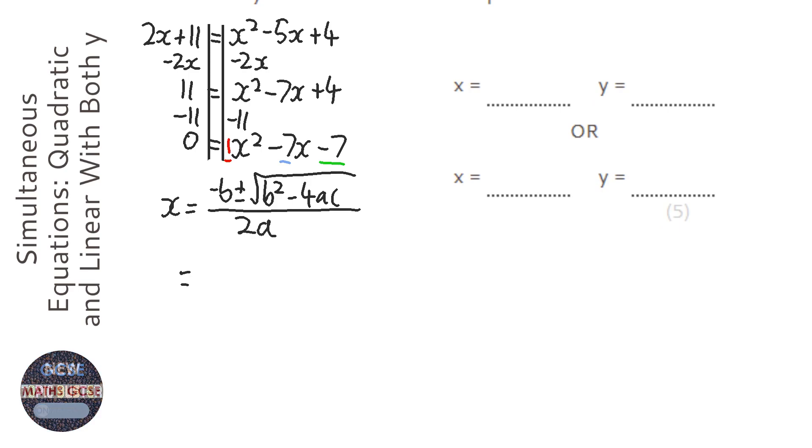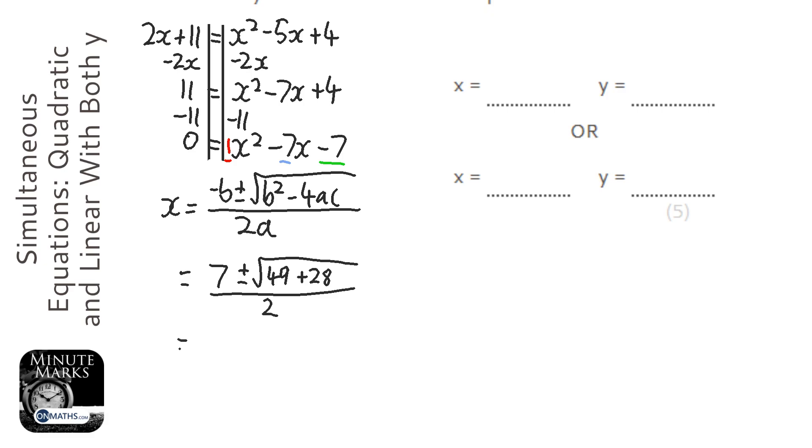So minus b is going to be just 7, plus minus b squared, which is going to be 49, minus 4 times a, which is 1 times c. So it's going to be, and you can use your calculator for this. So it's minus 4 times minus 7, which is positive 28, so it's going to be plus 28. OK, over 2. And so 49 plus 28 is going to be 77. So we can rewrite it like this.